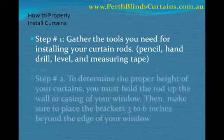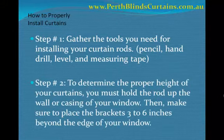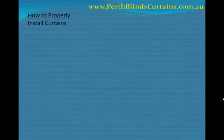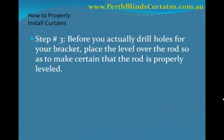Step number two, determine the proper height of your curtains. First, you must hold the rod up the wall or casing of your window. Then make sure to place the brackets 3 to 6 inches beyond the edge of your window. Next, before you actually drill holes for your bracket, place the level over the rod so as to make certain that the rod is properly leveled.